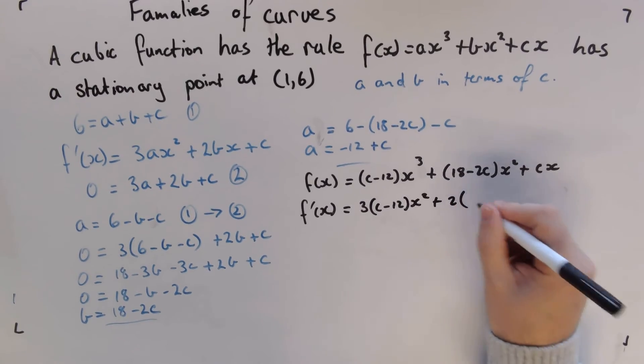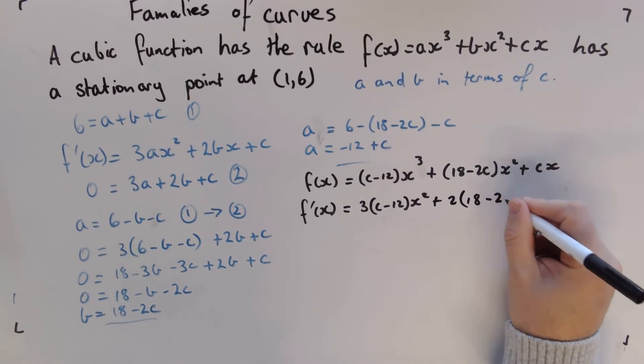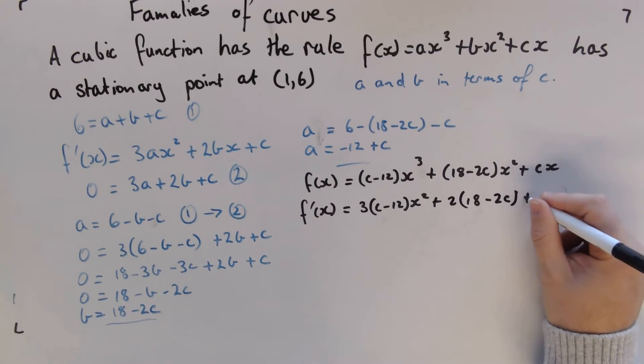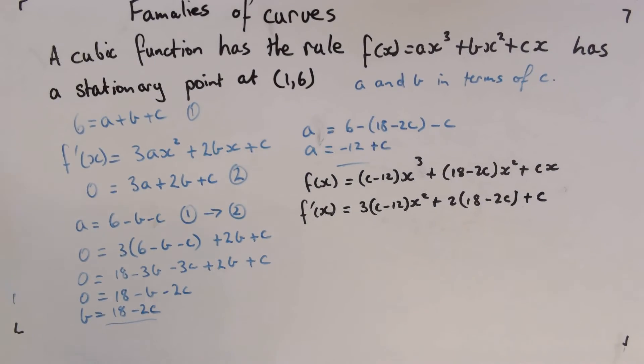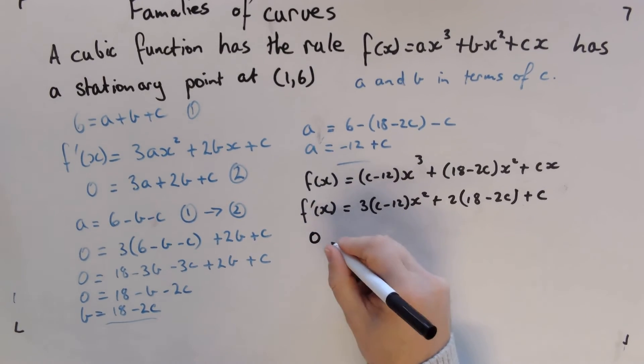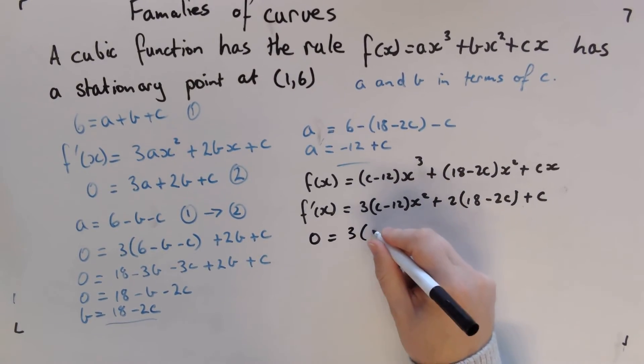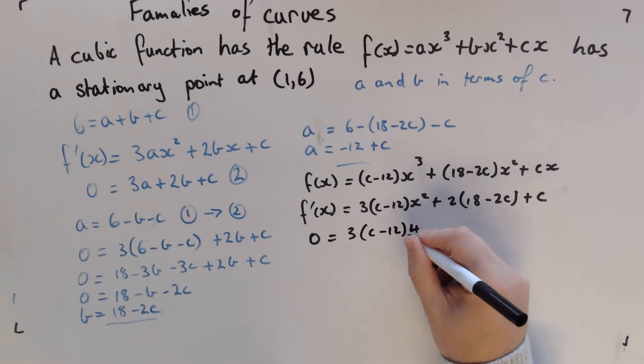+ 2(18 - 2c)x + c. And we are told that we're going to have a stationary point at 2, so we're going to say this is 0 when x is 2.